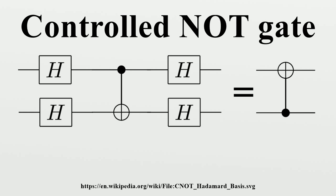In addition to a regular controlled NOT gate, one could construct a function-controlled NOT gate, which accepts an arbitrary number n plus 1 of qubits as input, where n plus 1 is greater than or equal to 2. This gate flips the last qubit of the register if and only if a built-in function, with the first n qubits as input, returns a 1. The function-controlled NOT gate is an essential element of the Deutsch-Jozsa algorithm.